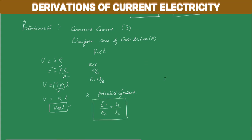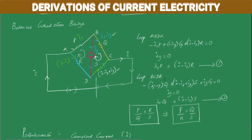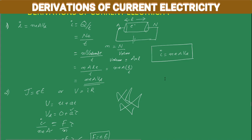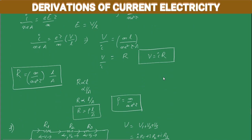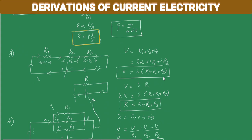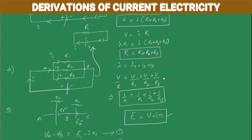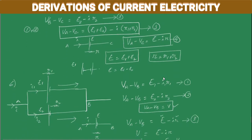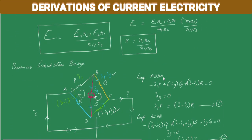These are the derivations of current electricity. We began with I = NeAVd, then J = σE as the deduction of Ohm's law, followed by V = IR, then R = ρL/A, resistors in series, resistors in parallel, cells in series, cells in parallel, balanced Wheatstone bridge, and finally the principle of potentiometer.